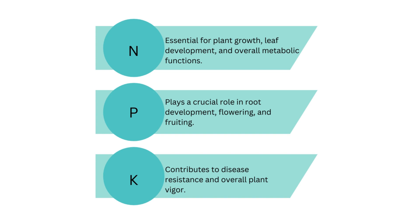Finally, the symbol K stands for potassium. Potassium is important for the activation of enzymes, osmoregulation — that is regulating water balance — and photosynthesis. Potassium also contributes to disease resistance and overall plant vigor.